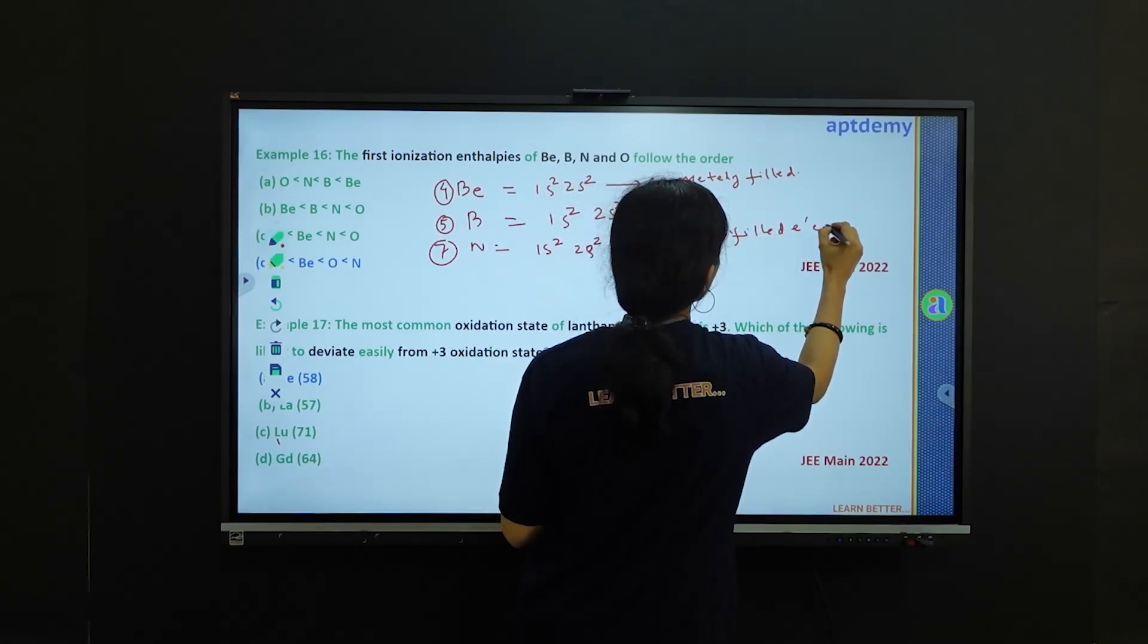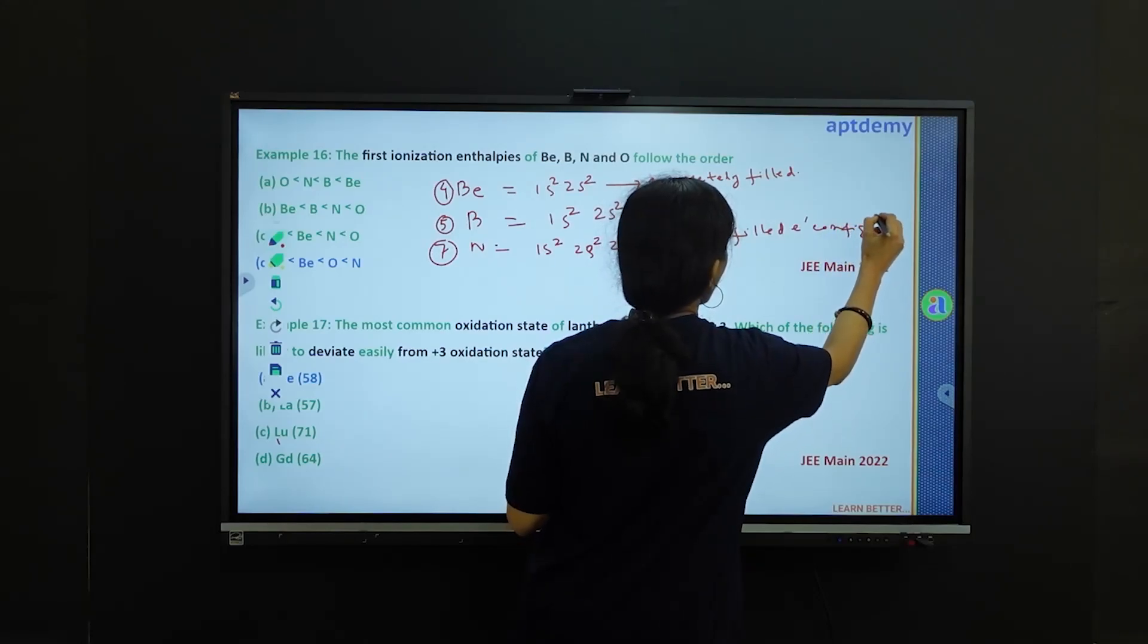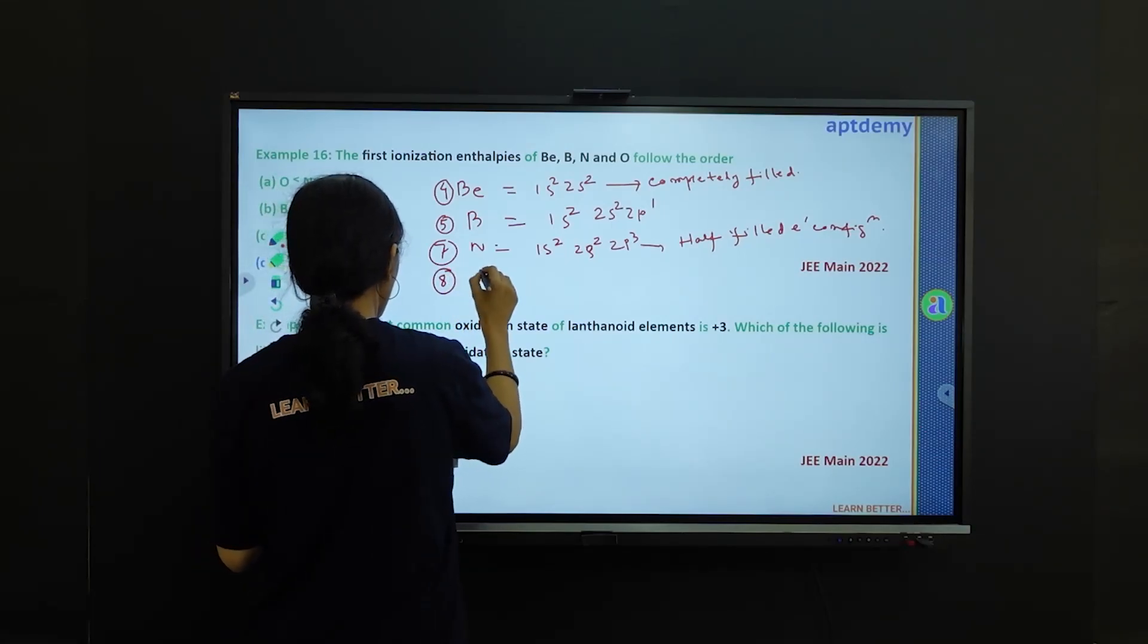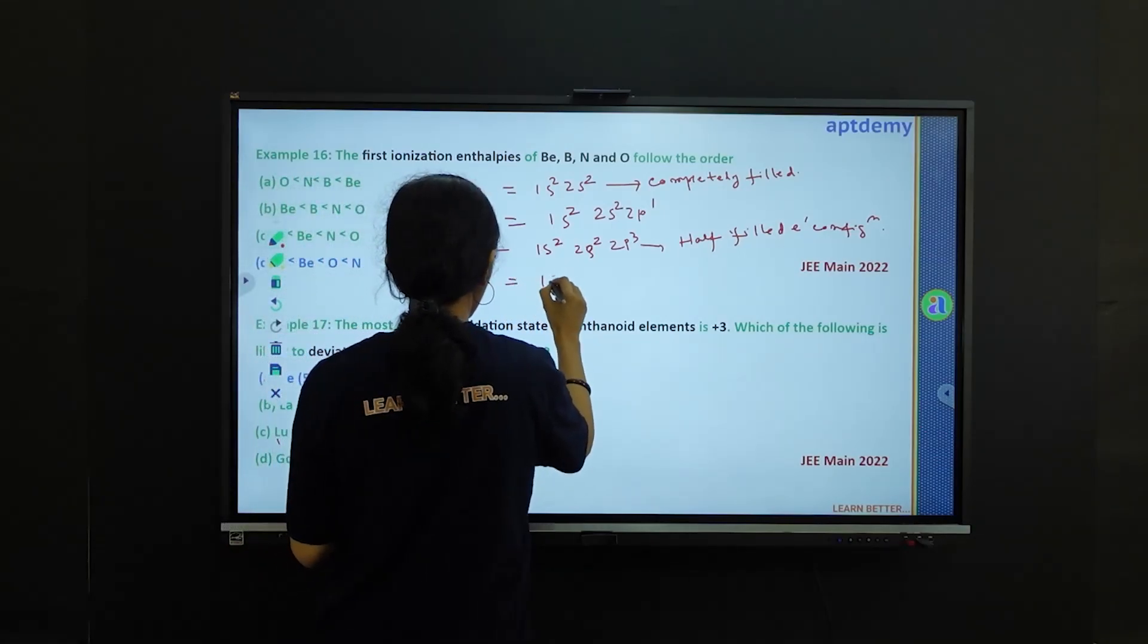And the last one is oxygen which is having atomic number of 8, and the electronic configuration is 1s2 2s2 2p4.